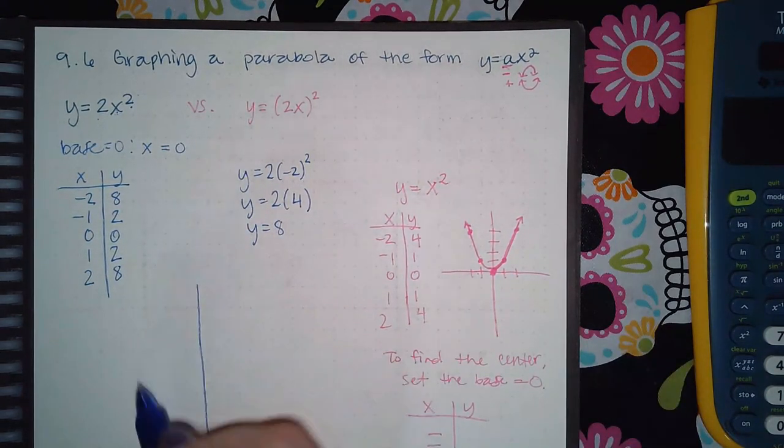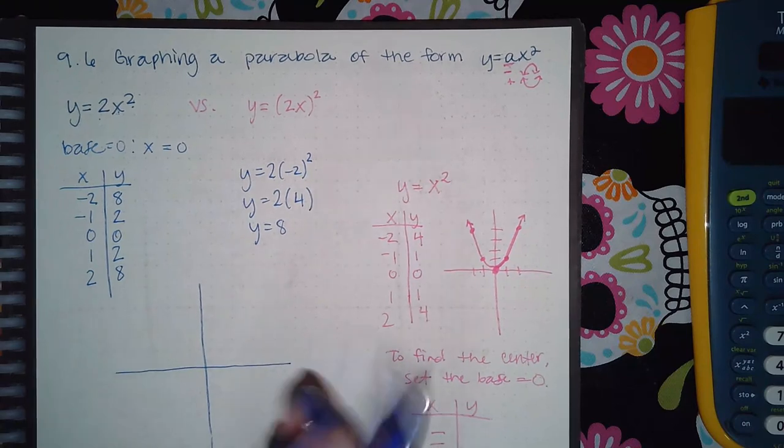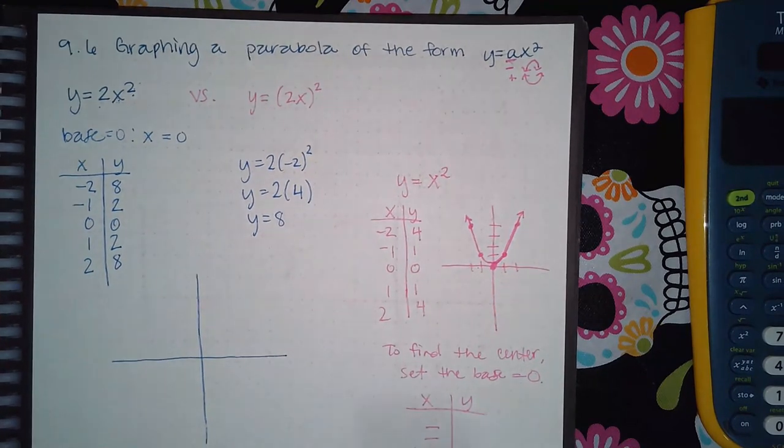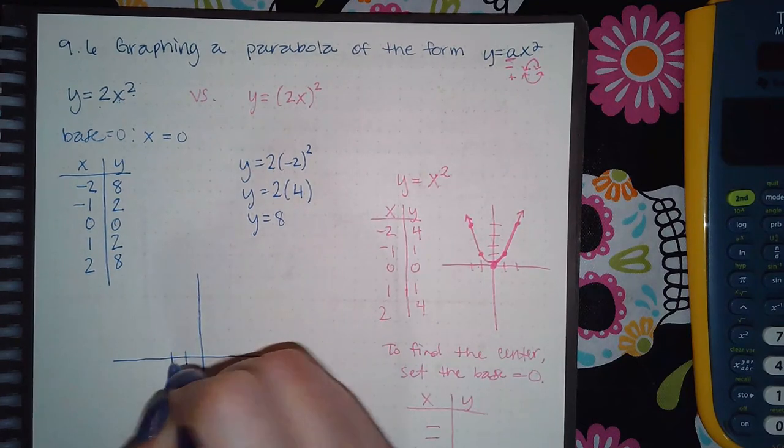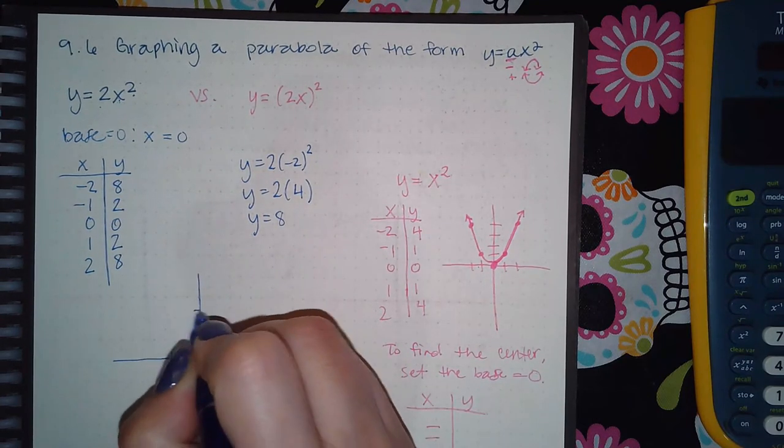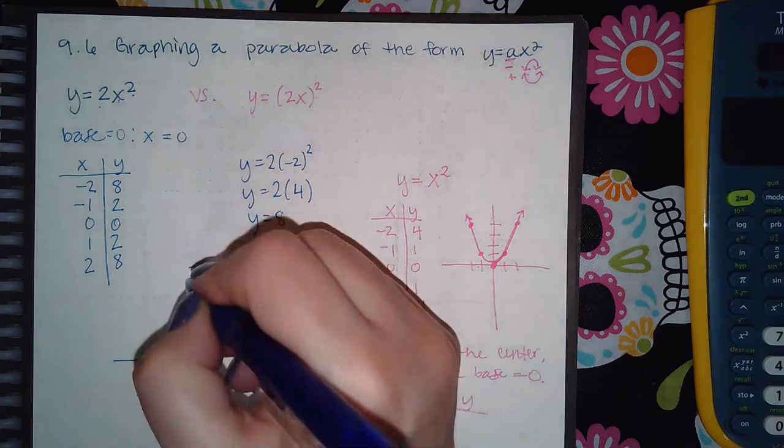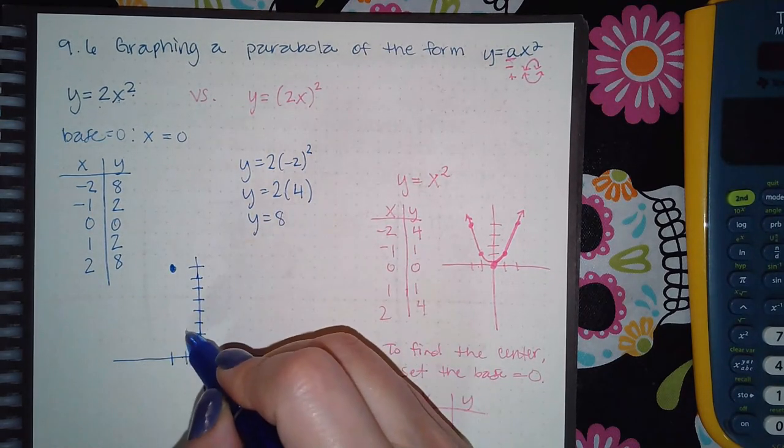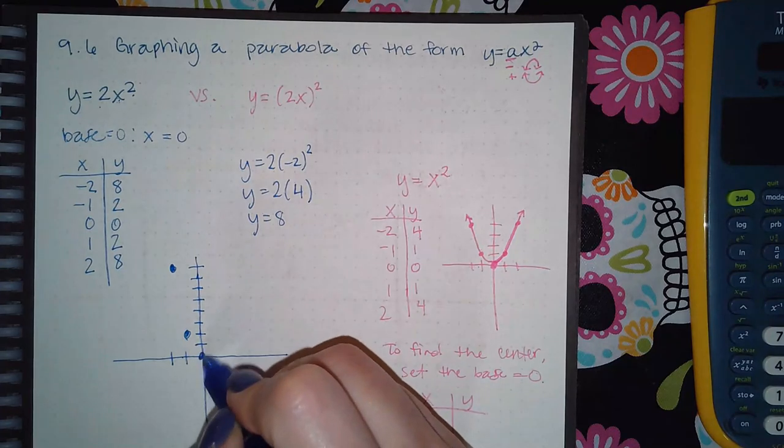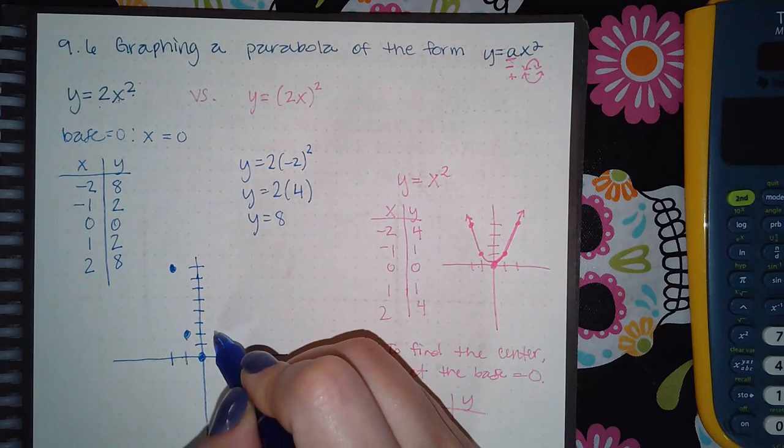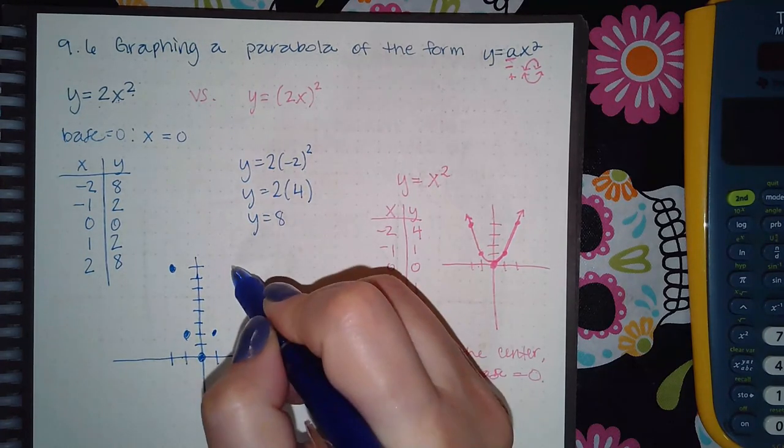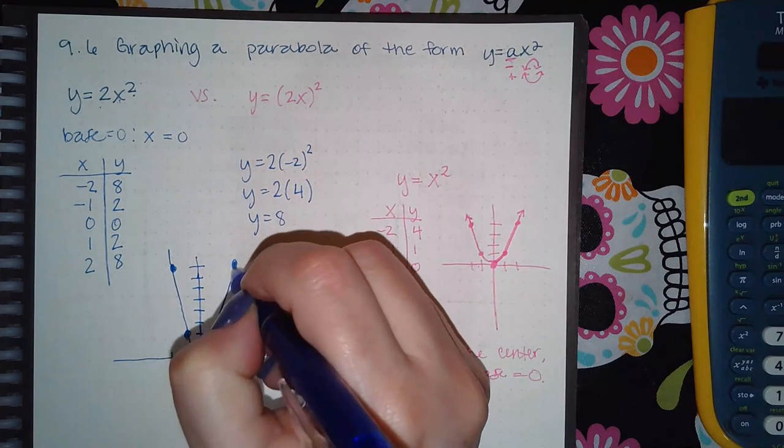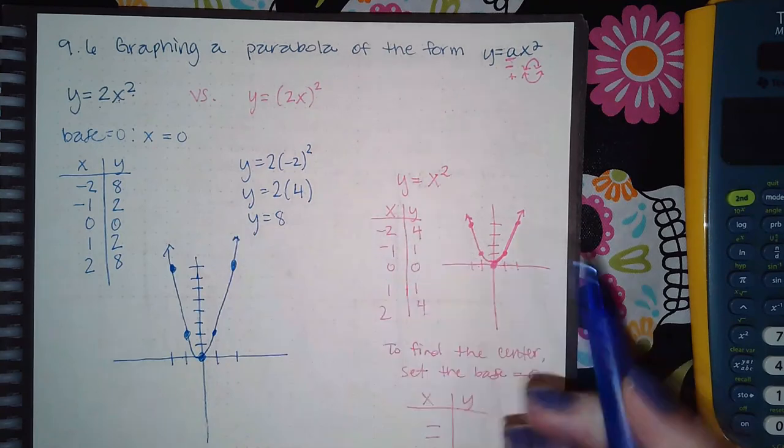So then if I draw this myself on paper so that when I do enter it in the computer I'll know whether or not it's correct, I'm going to have negative two and one, two, three, four, five, six, seven, eight, so negative two and eight, negative one and two, zero zero, one and two, and then two and eight.